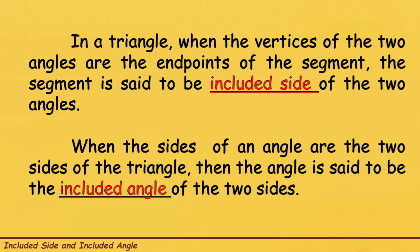When the sides of an angle are the two sides of the triangle, then the angle is said to be the Included Angle of the two sides. Dito naman, Included Angle — pag sinabi natin Included Angle, sa triangle we have three sides. Ang magiging given doon is two sides, at yung two sides na yun, ang napaggigitnaan nilang angle, ang tawag doon ay Included Angle. So para mas malinawan tayo, let's have an example.